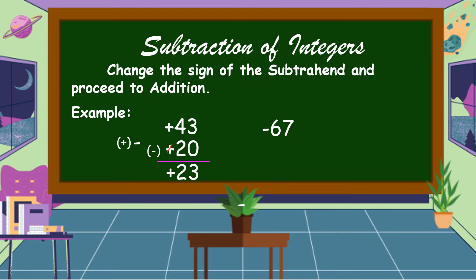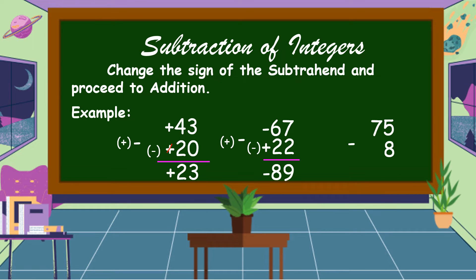Another example: negative 67 minus positive 22. First, change the sign of the subtrahend from positive to negative and proceed to addition. Our addends are now negative 67 and negative 22. They have the same signs, so we add: 67 plus 22 equals 89, and copy the common sign which is negative. Therefore, the answer is negative 89. Another example: 75 minus 8. 8 is positive, so we change it to negative, and from subtraction it becomes addition: 75 plus negative 8. They have different signs, so we subtract: 75 minus 8 equals 67.